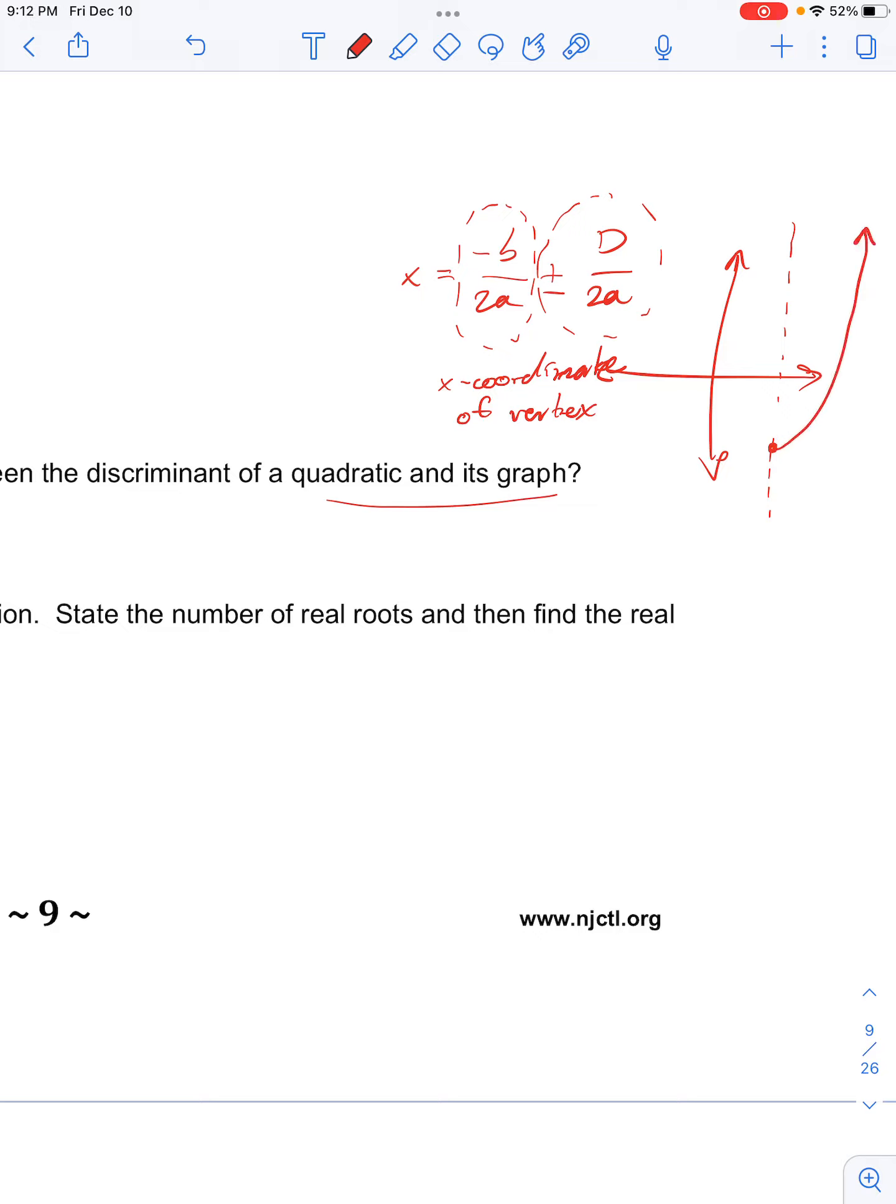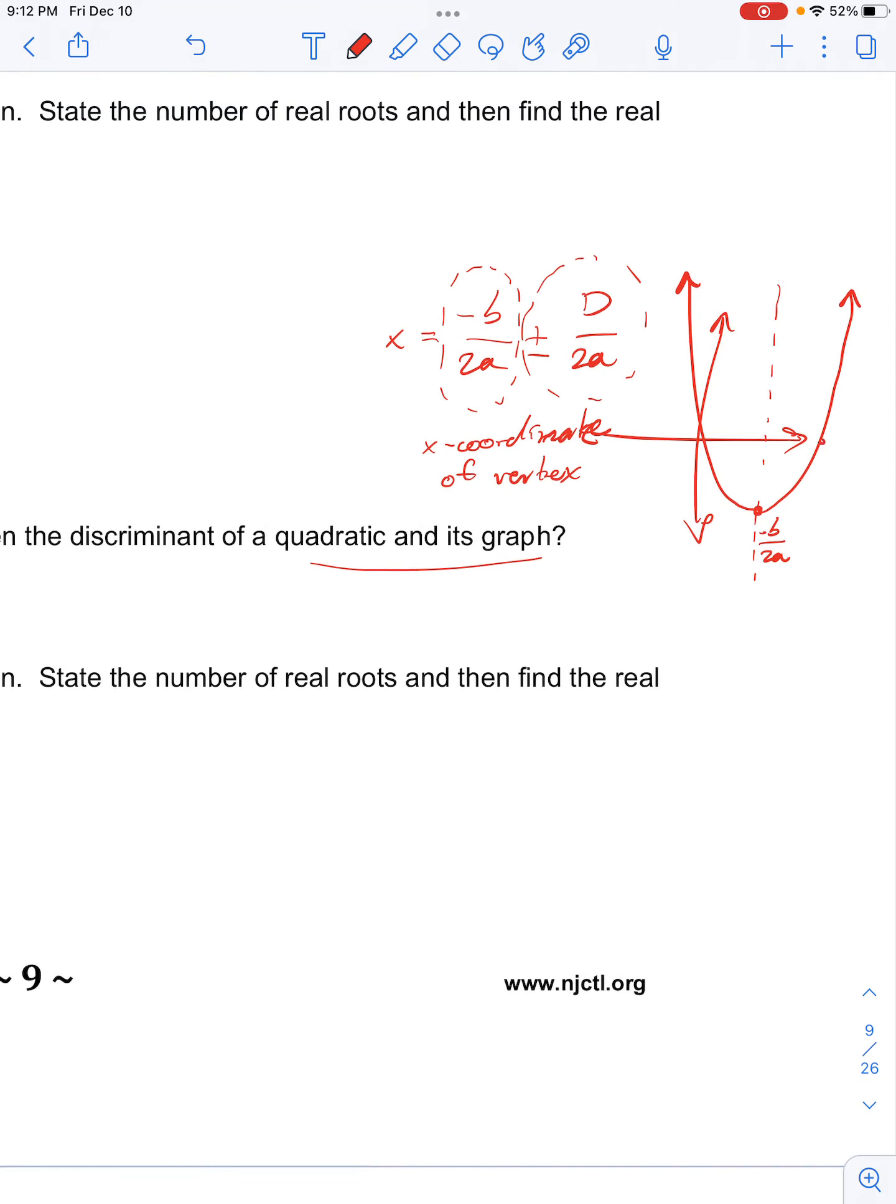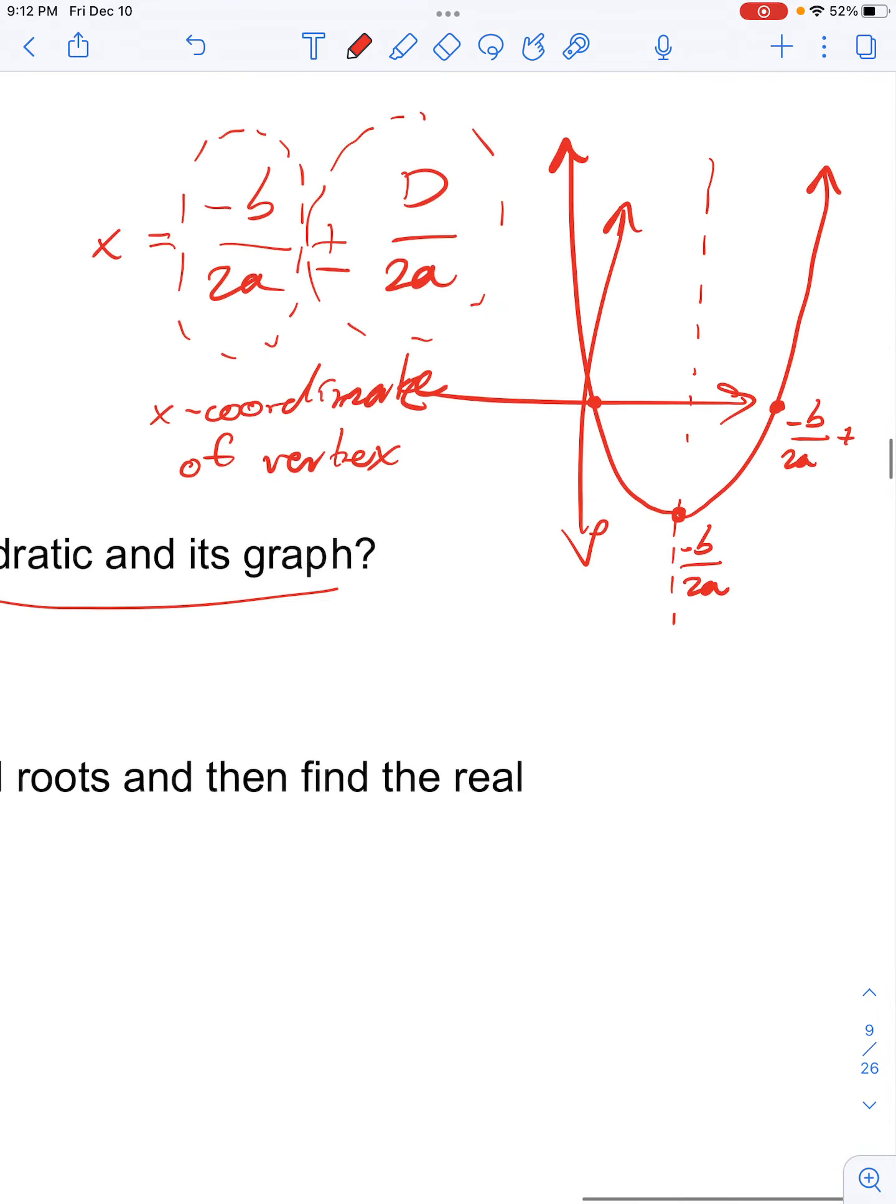then this vertex is at negative b over 2a. This x-intercept would be at negative b over 2a plus the discriminant over 2a. And this root would be at negative b over 2a minus the discriminant over 2a.